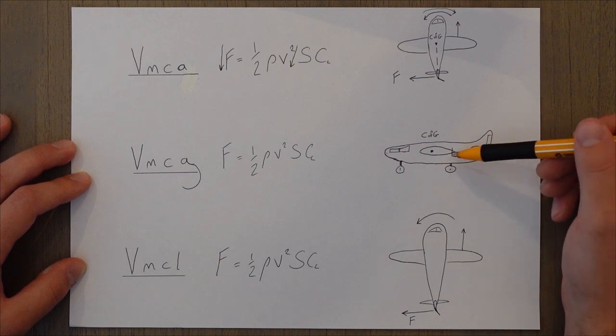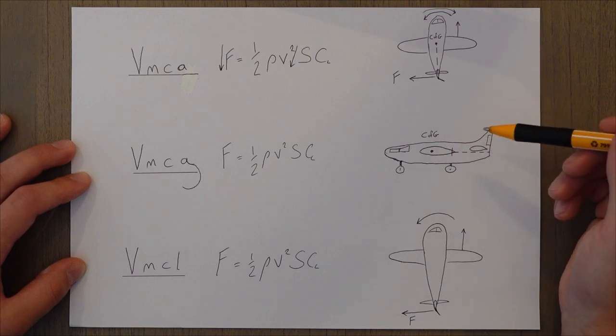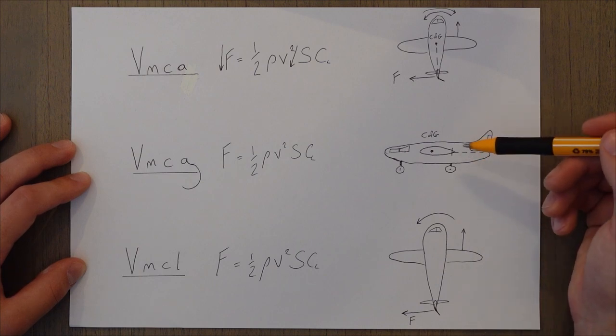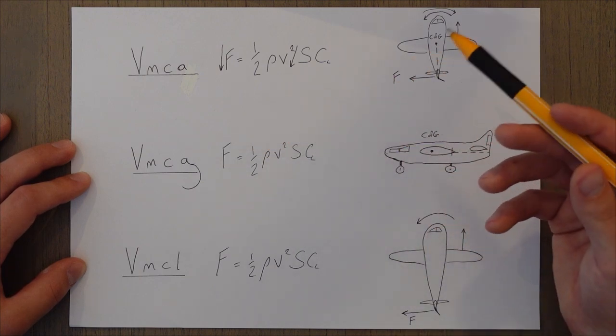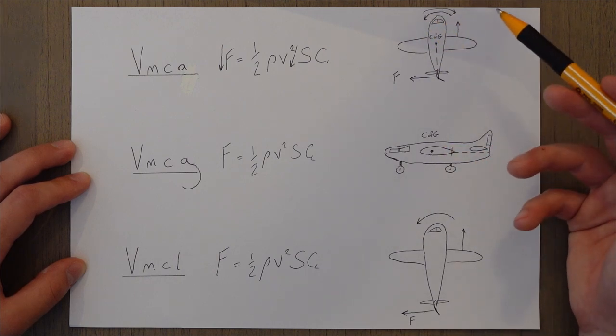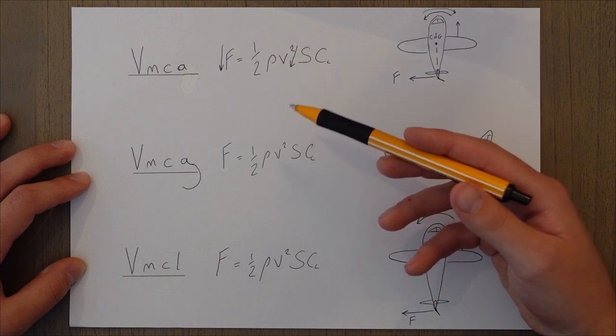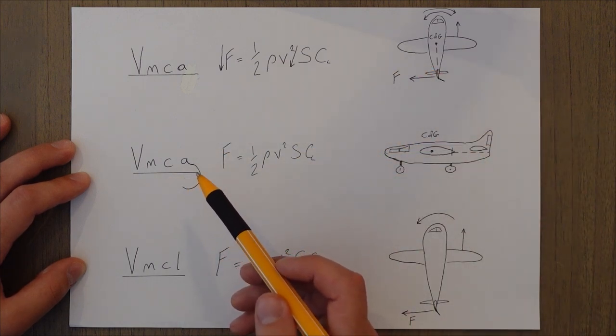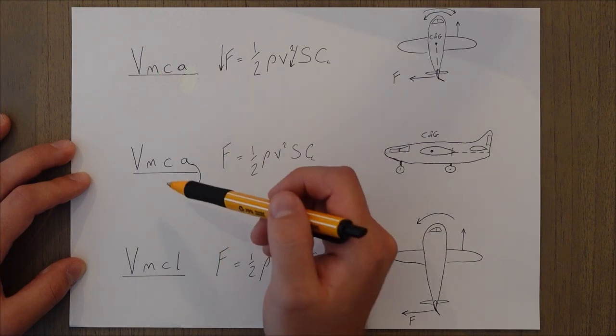Our center of gravity is normally located further forward than our main wheels. So our balance arm for our corrective moment from the tail is a lot shorter. We therefore need to generate more force to achieve the same strength of corrective moment. To generate this stronger force, we have to travel faster and that means that VMCG is larger than VMCA. It's a higher speed.